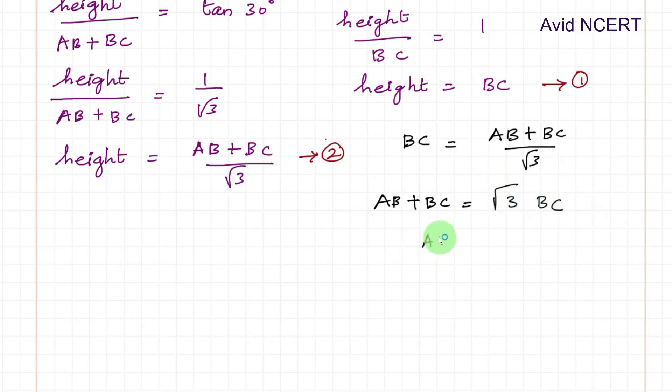Taking BC to the other side, AB equals root 3 BC minus BC, so AB equals BC into root 3 minus 1.